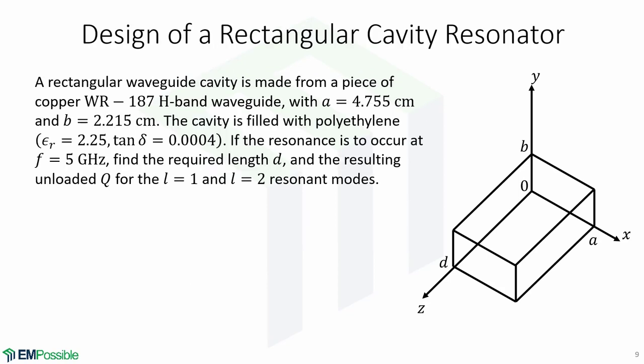Now let's look at an example of a design of a rectangular cavity resonator. A rectangular waveguide cavity is made from a piece of copper WR-187 H-band waveguide with dimensions A equal to 4.755 cm and B equals 2.215 cm. The cavity is filled with polyethylene, which has εr equals 2.25 and loss tangent 0.0004. If the resonance is to occur at a frequency of 5 GHz, find the required length D and the resulting unloaded Q for the l equals 1 and l equals 2 resonant modes.